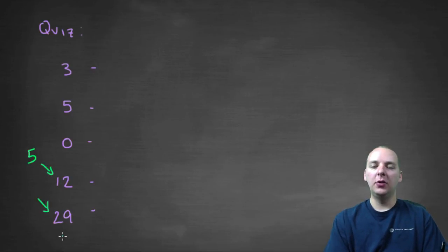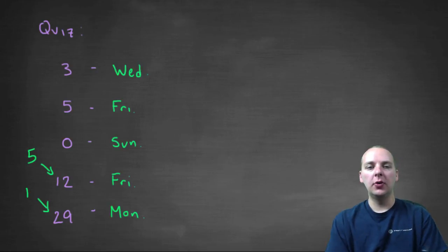Twenty-nine, if you take modulo seven, would be a one, and one would be a one day, a Monday. So here's the answers, so hopefully you've got Wednesday, Friday, Sunday, Friday, and Monday.